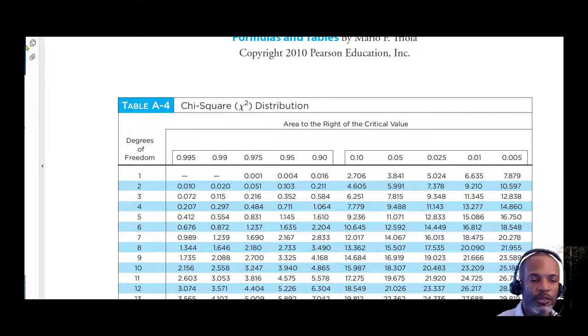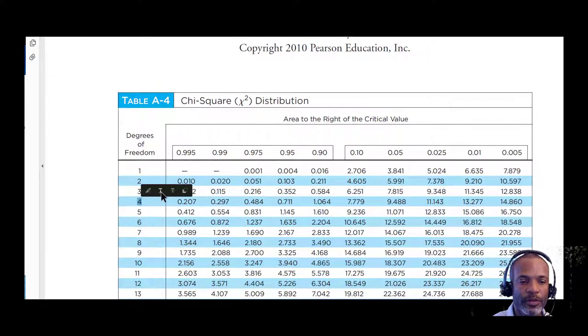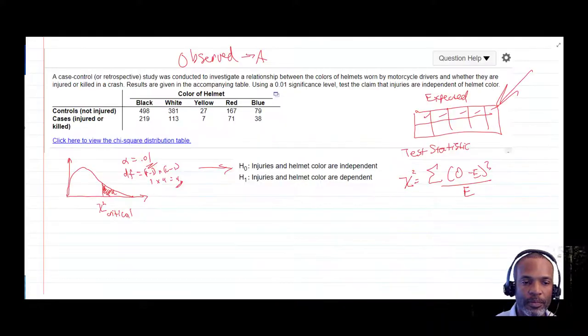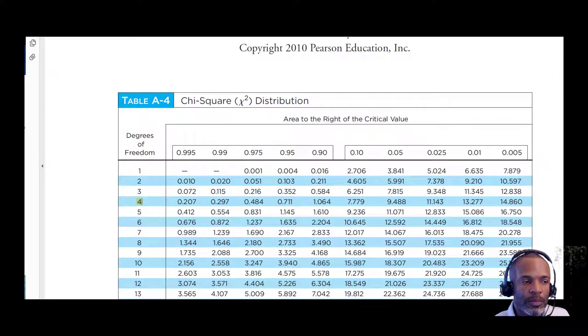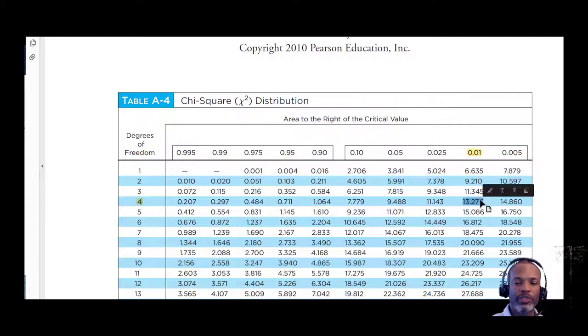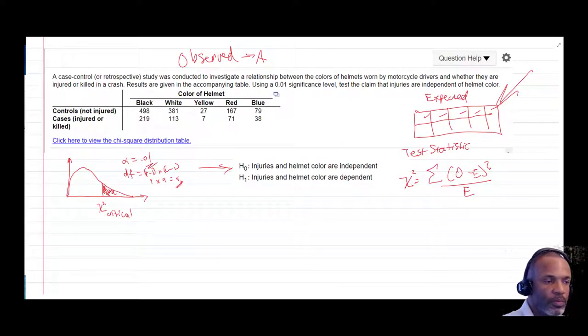So let's grab that using our 4 for our degrees of freedom, and using alpha equals 0.01 for our level of significance, 0.01. And where those two intersect is the 13.277. So that is our critical value, 13.277.